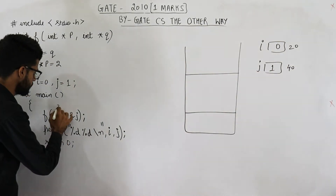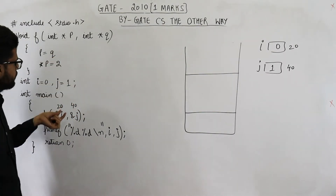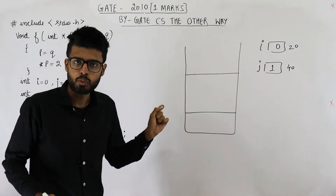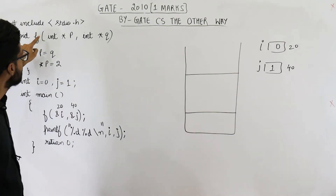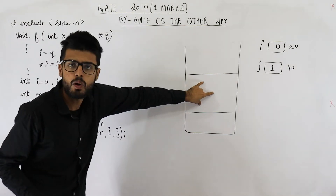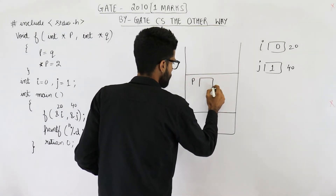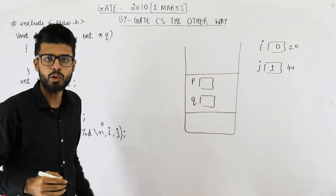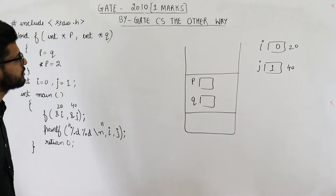That means 20 and 40 are passed. So 20 will be given to p and 40 will be given to q. Star p and star q are pointer-type variables that are local to function f, meaning these variables will be present inside the activation record of f — the activation record that has just been pushed. Both p and q are pointers to integers.